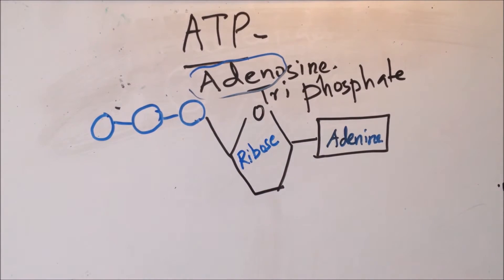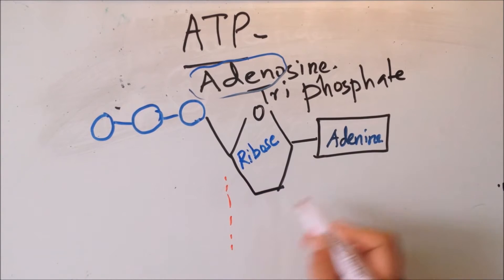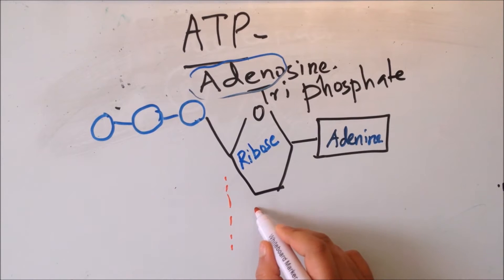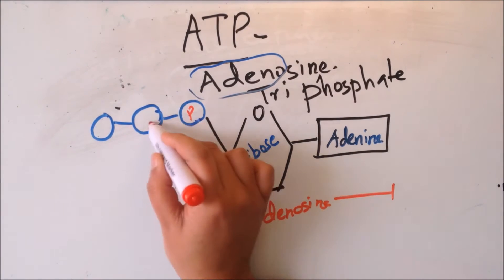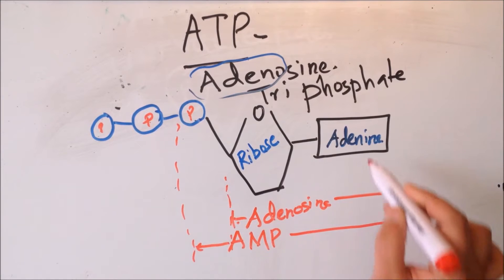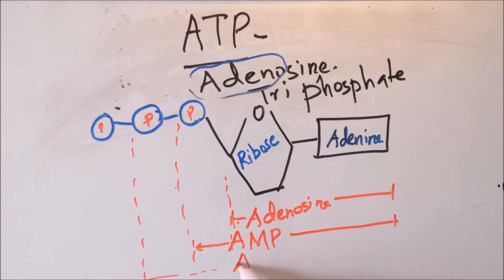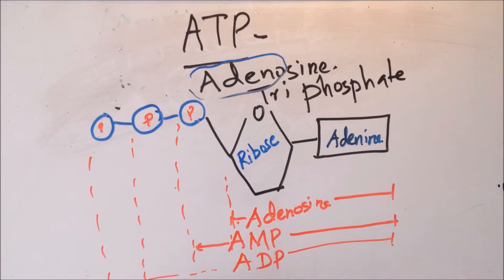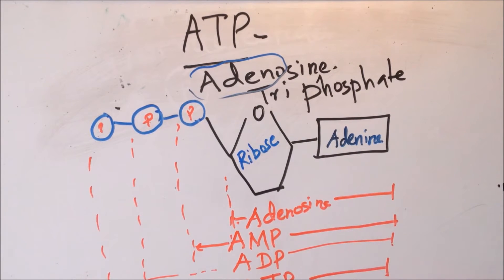Going into detail about the ATP structure: this is adenine. When adenine binds with the ribose sugar, we call this adenosine. These are phosphate groups. If one phosphate group binds with adenosine, we call it AMP - adenosine monophosphate. If adenosine binds with two phosphates, we call it ADP - adenosine diphosphate. When it binds with three phosphates, the molecule we get is ATP - adenosine triphosphate.